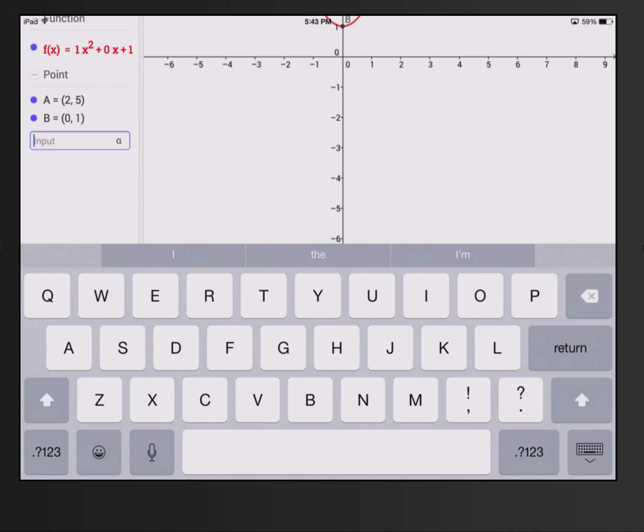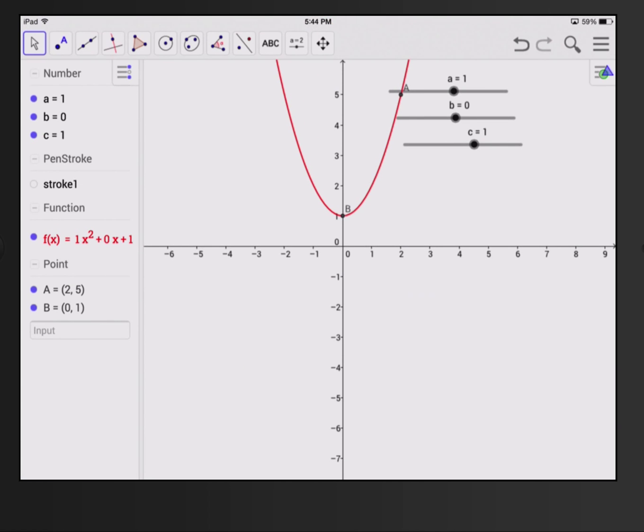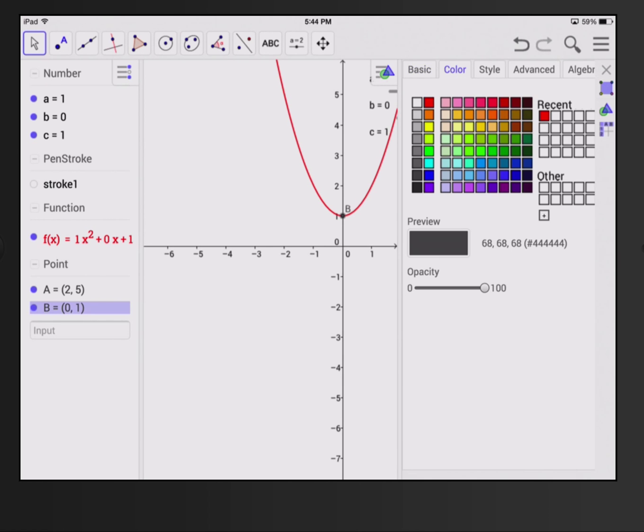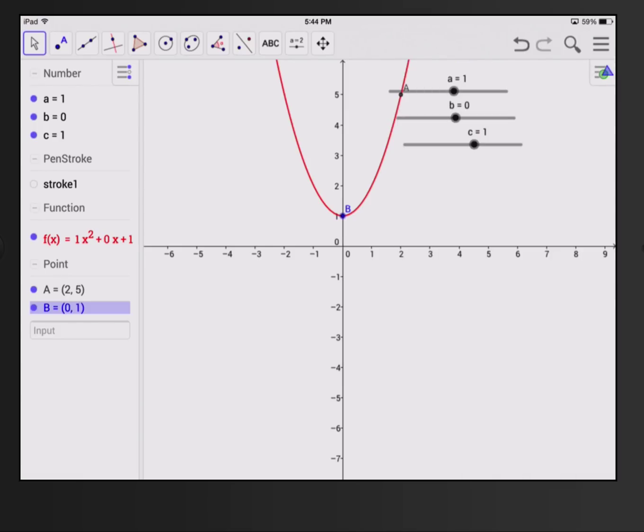And I'm going to now focus on that point B, and first of all, I'm going to change its color. I'm going to object properties, and color, I think I'm going to go with a blue. All right, and I'm also going to turn the trace on, so we can follow where that point B goes, and we start moving the lowercase b slider. All right, so I'm closing that, tapping on B again, tap and hold, and now I'm going to turn trace on. I'm going to make sure it's on, sure it is.